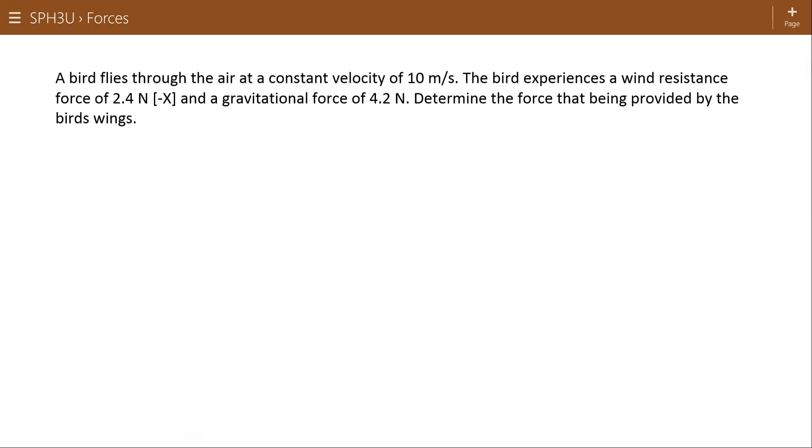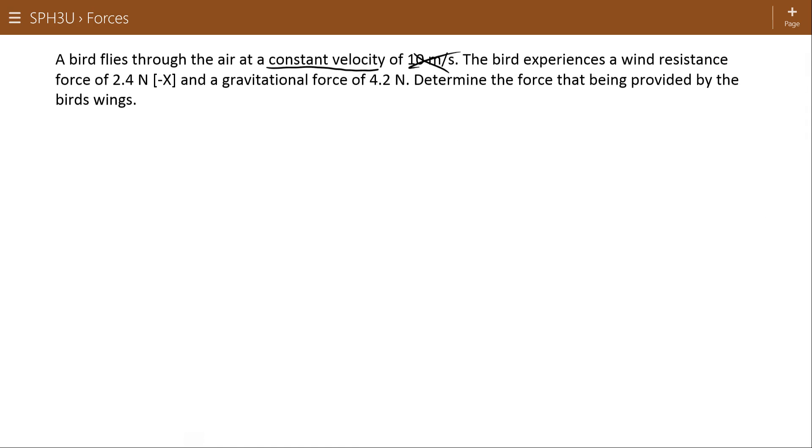All right, let's dive into some problems. A bird flies through the air at a constant velocity—oh, there's our keywords to tell us that this is a Newton's first law problem—of 10 meters per second. I don't really care how fast the bird's going. Once I know that it's constant, I know the acceleration is equal to zero. The bird experiences a wind resistance force, I'll call that Fw for wind, of 2.4 Newtons in the negative x direction.